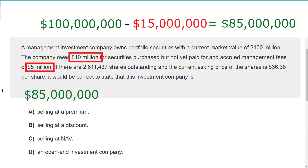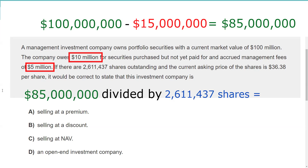We divide the $85 million in net assets by the number of shares outstanding — 2,611,437 — and we come up with an NAV of $32.55. It's trading at $36.38, so it's trading at a premium. The answer is A: it is selling at a premium.